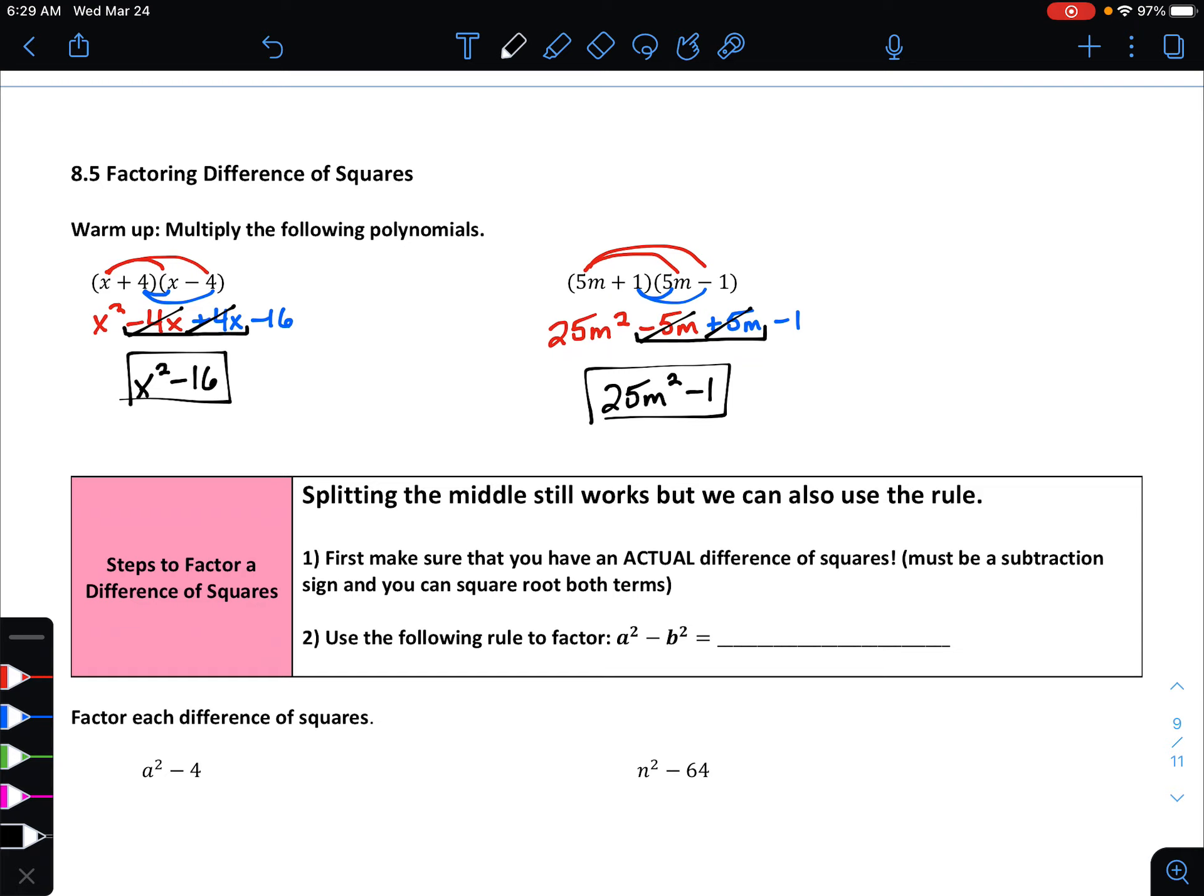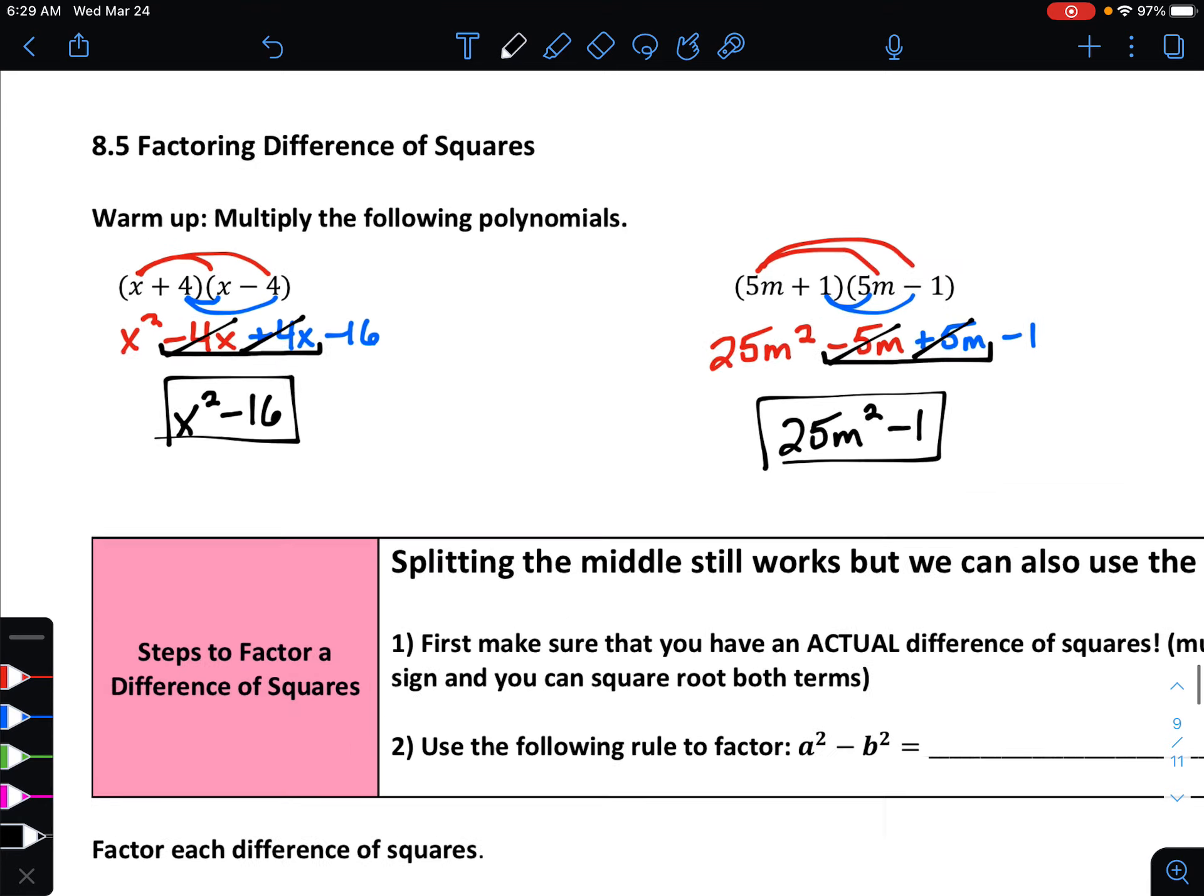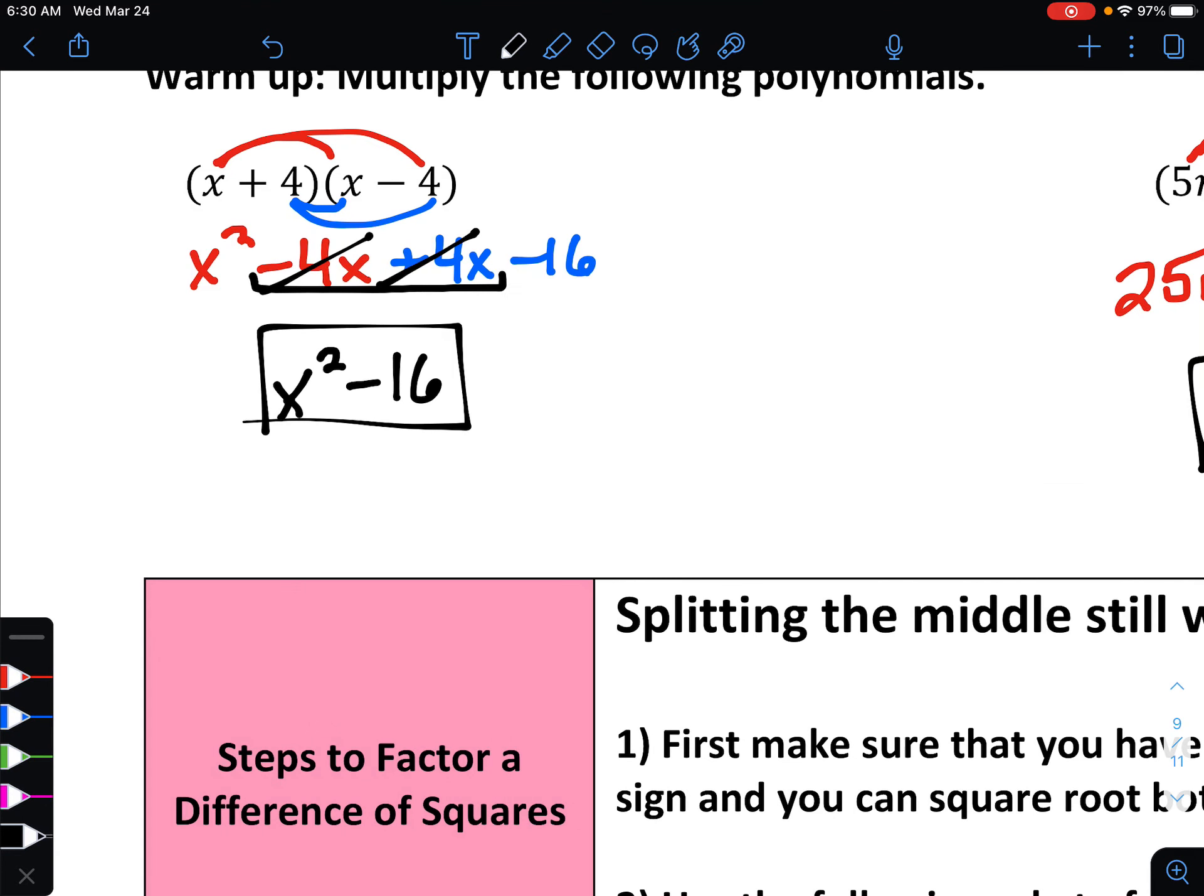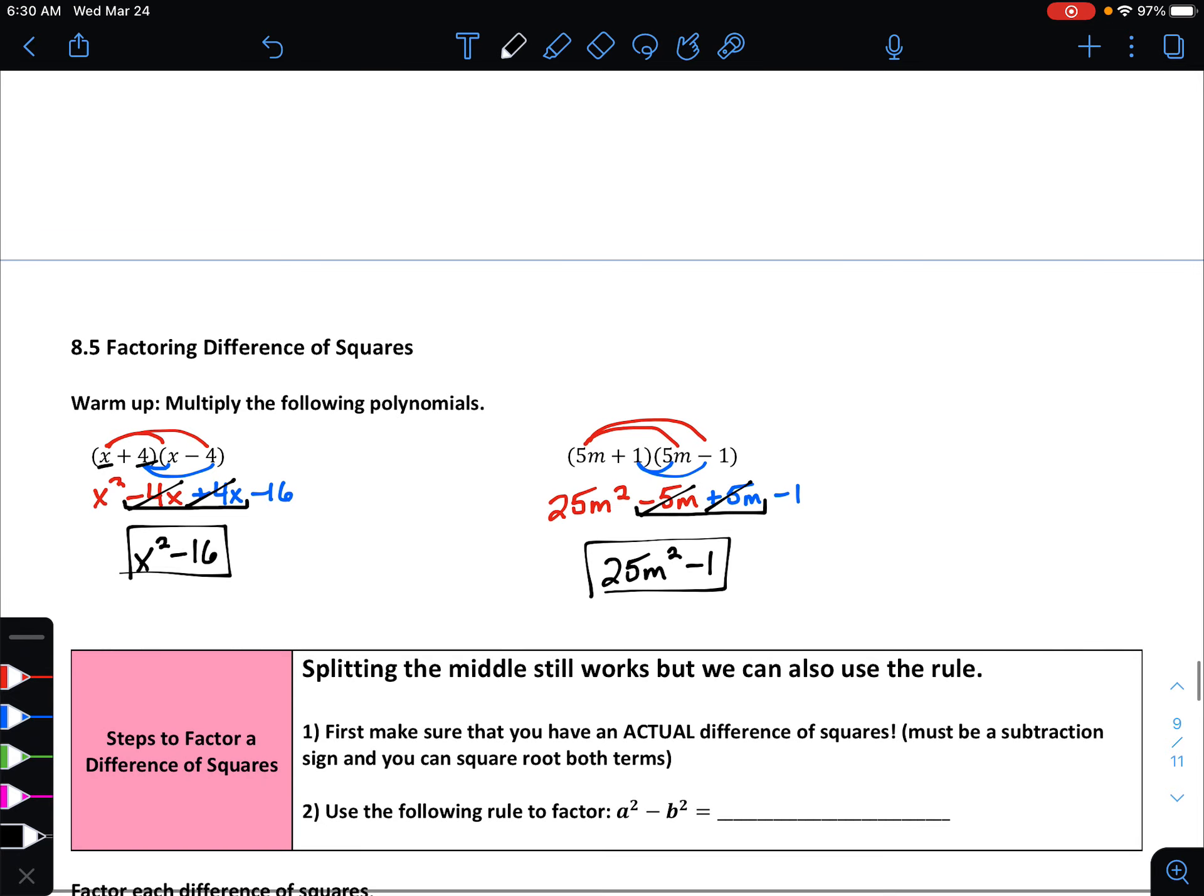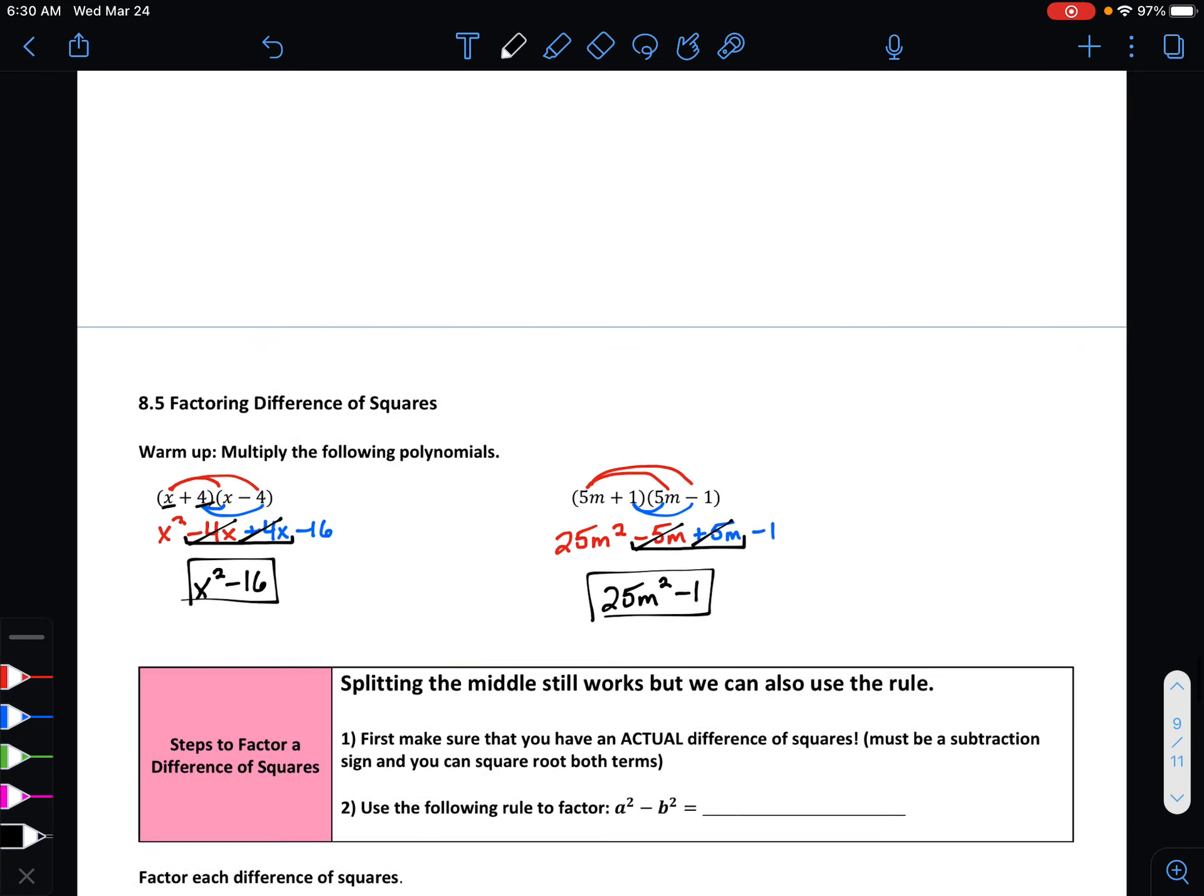So notice that in both cases, what ended up happening was our middle two terms canceled one another out. Not only that, but the first term is really just the first number squared, or the first term squared. In this case, that was x squared. The second number is the number 4 squared. And that became 16. And notice that it's subtraction because of the positive multiplied by a negative. In fact, the same is true on the second one as well.